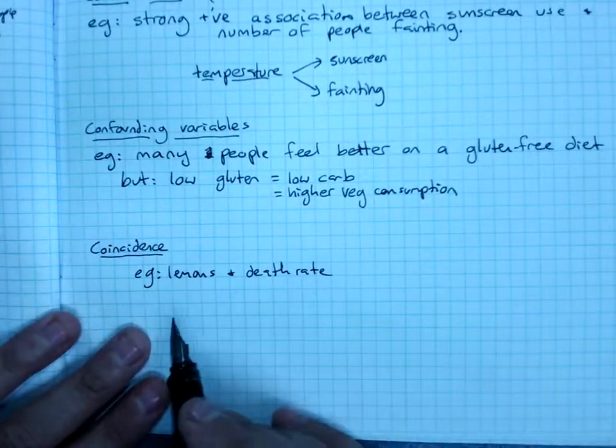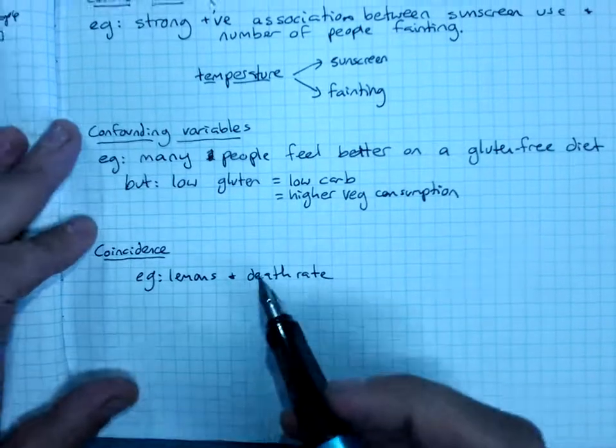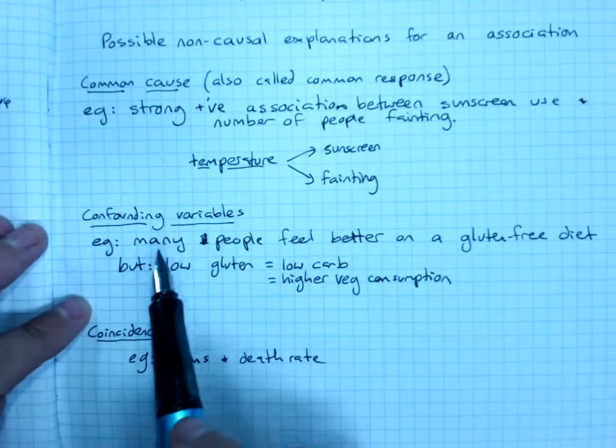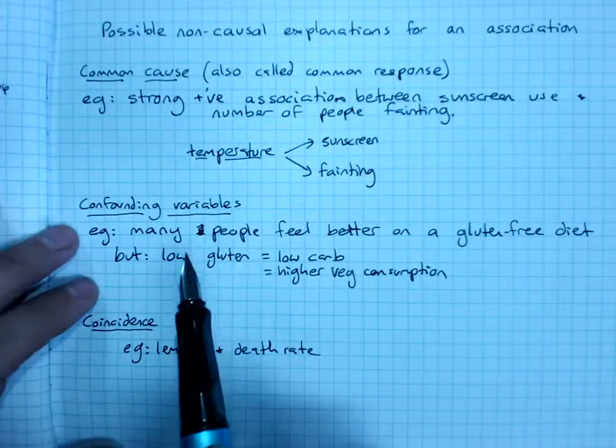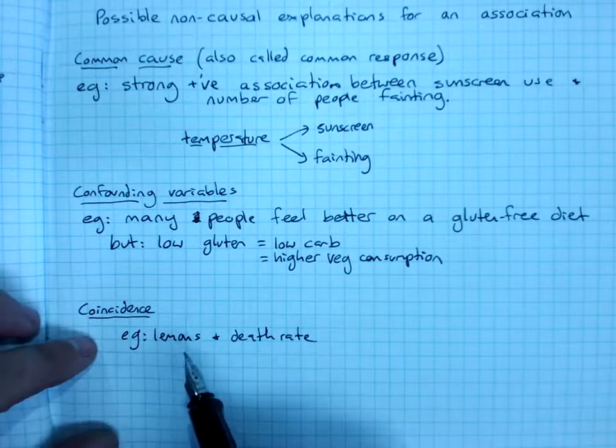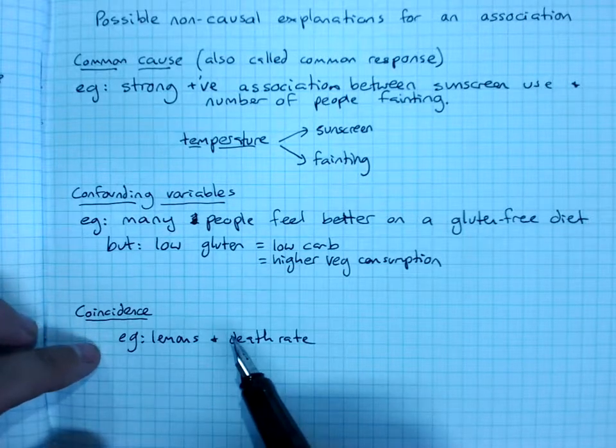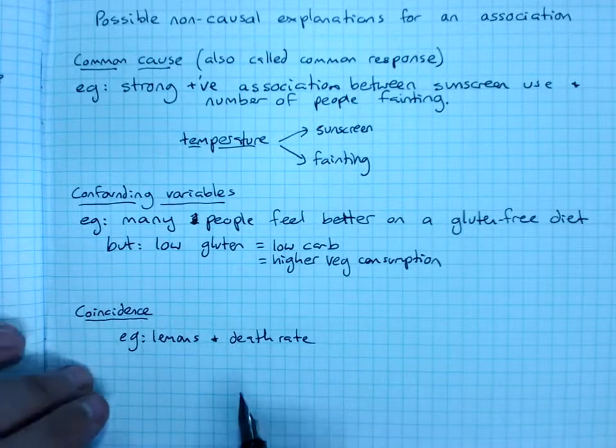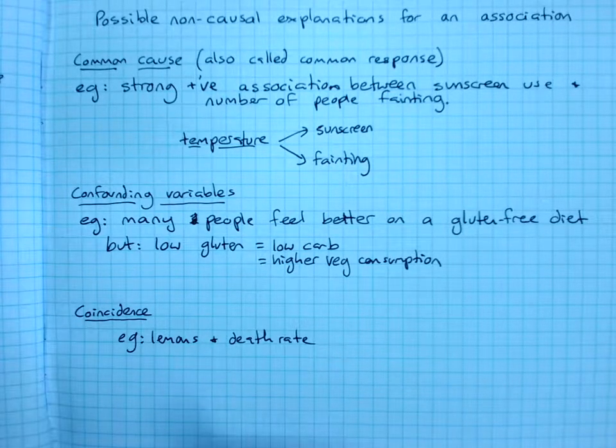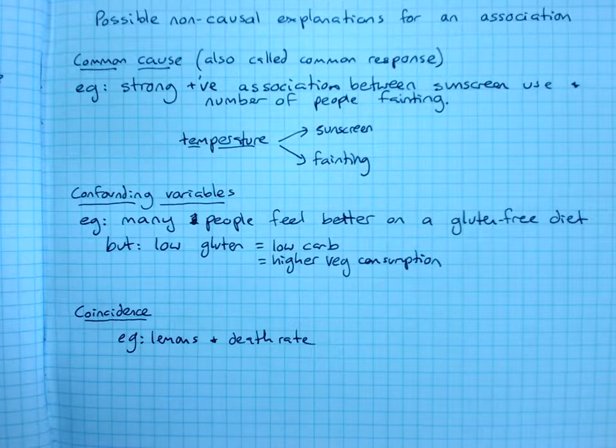So coincidence is also, when you can't see an obvious common cause or obvious confounding variables, sometimes things just go up and down over time. And you can pick any of them and put them together, and it looks like you might have a correlation, but there's no connection whatsoever. Thank you.